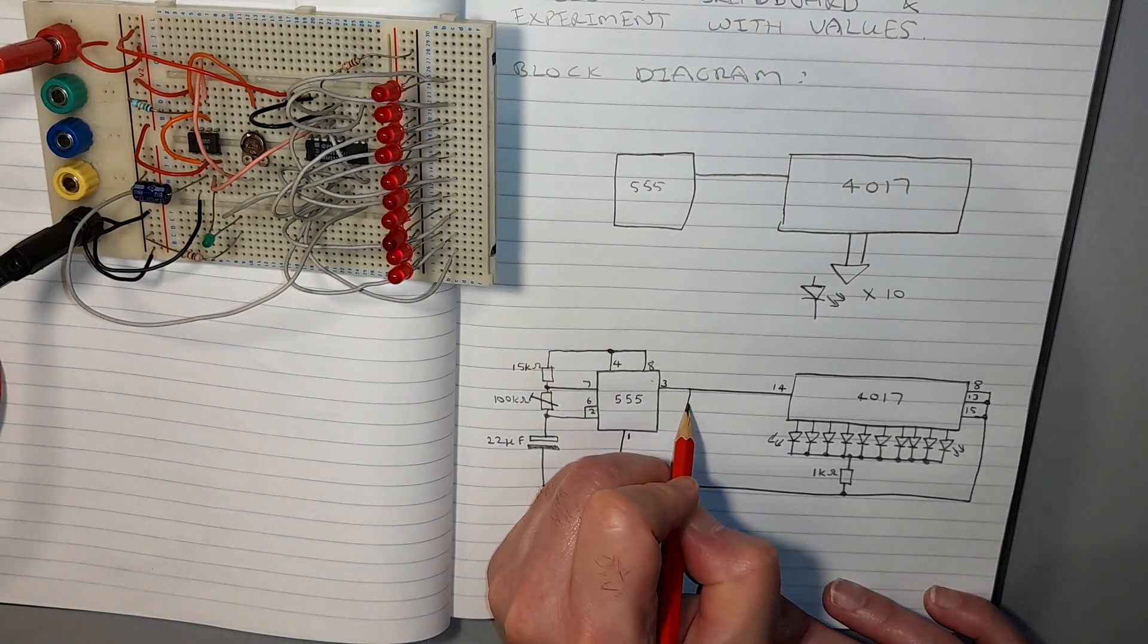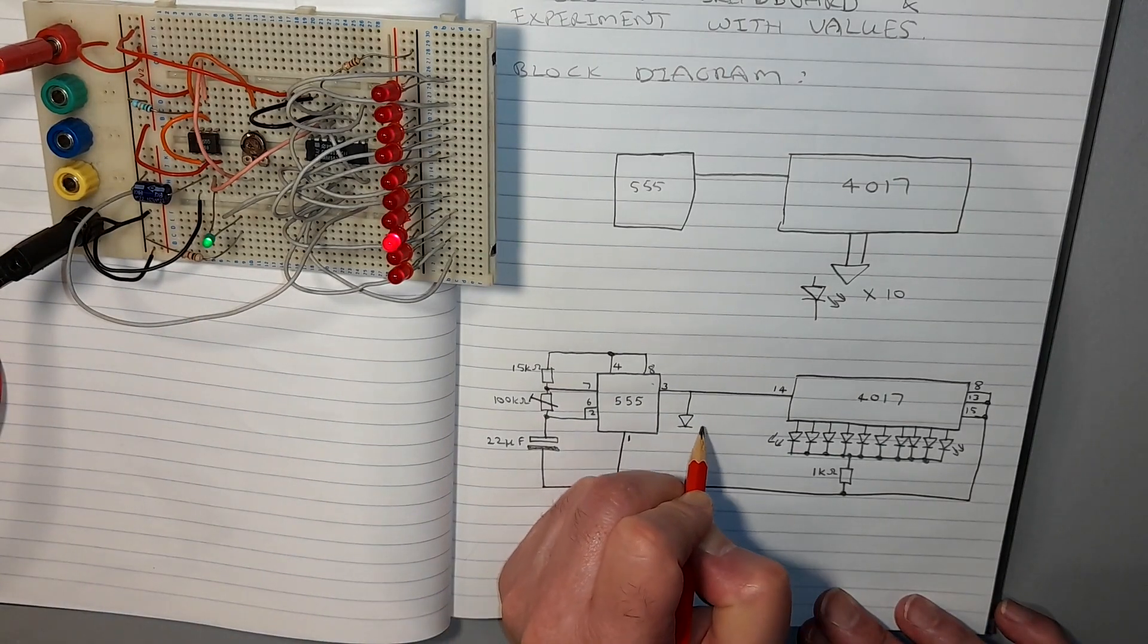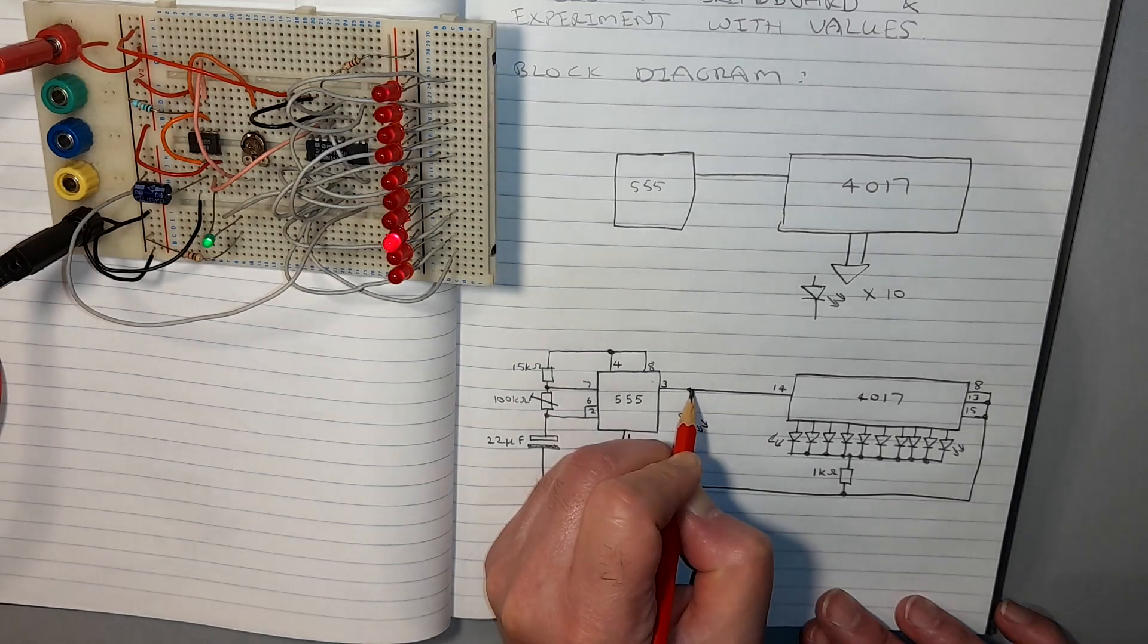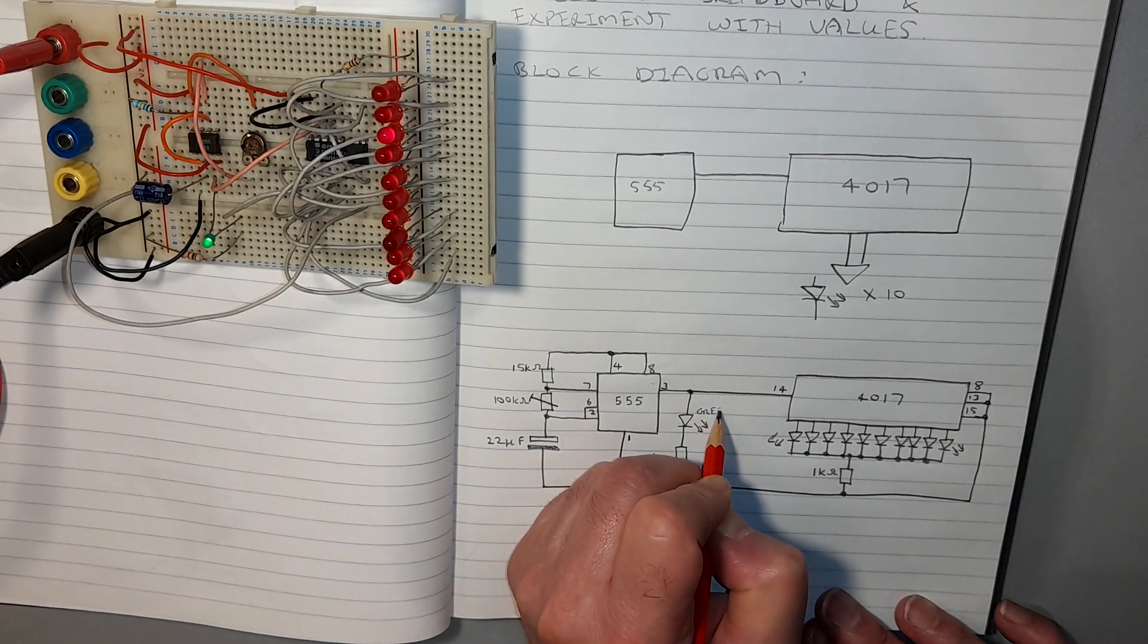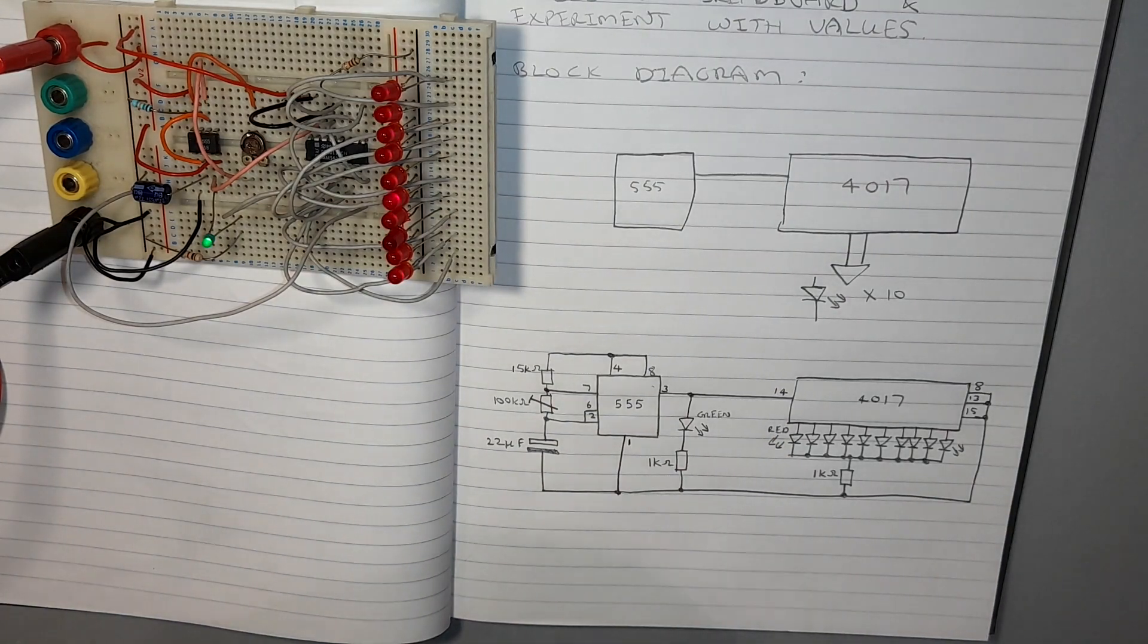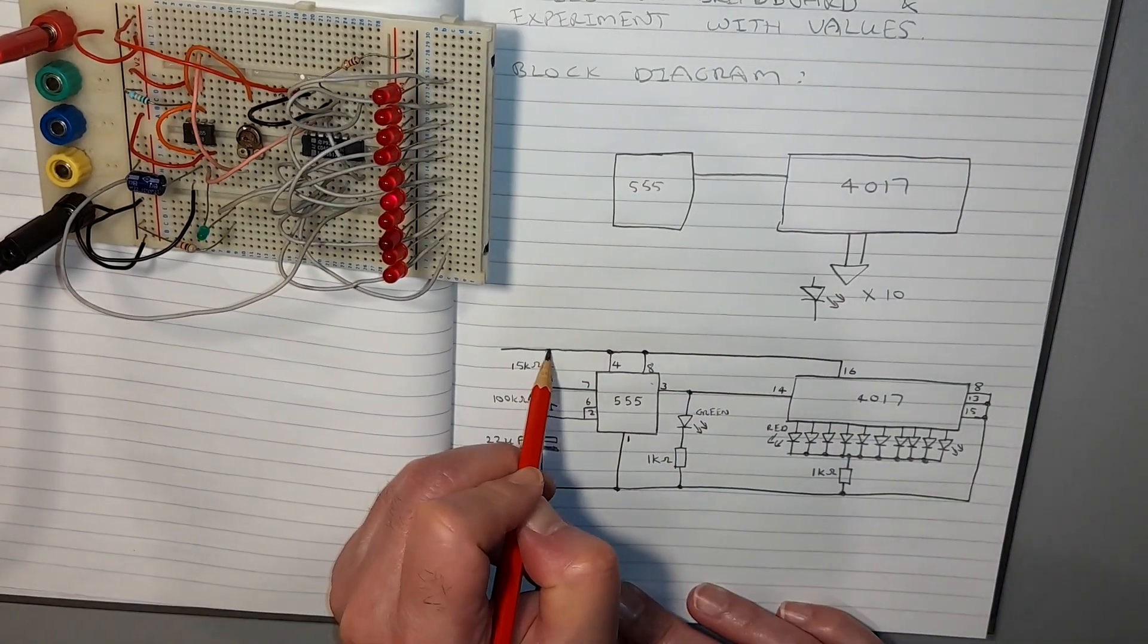Lastly, I forgot to mention the little green monitoring LED that gave me so much trouble. This comes out from pin 3 of the 555 with its cathode connected to a 1 kilo ohm resistor down to negative. Lastly, I've got to add the positive supply to pin 16 of the 4017 and include the power supply voltage.